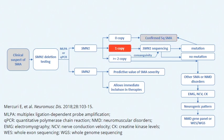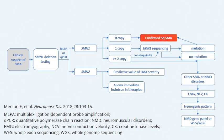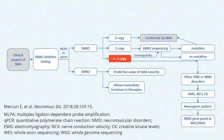We can find one copy of SMN1, and in this situation we have to proceed with the sequencing of SMN1, because we need to look for a point mutation in the other allele. If we find a point mutation in one allele and a deletion in the other allele, we can confirm the SMA diagnosis. This represents around 5% to 10% of patients who have the compound heterozygous mutation.